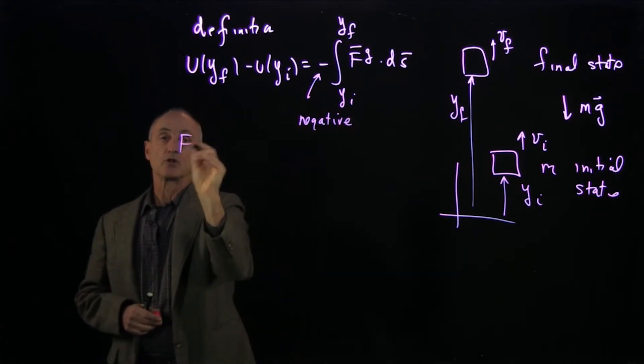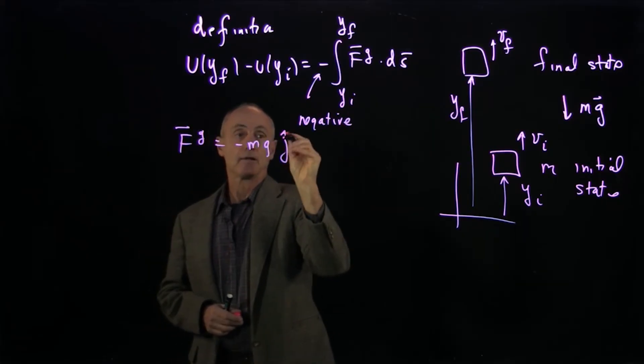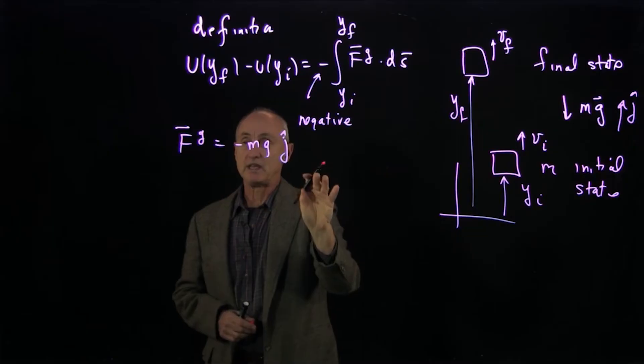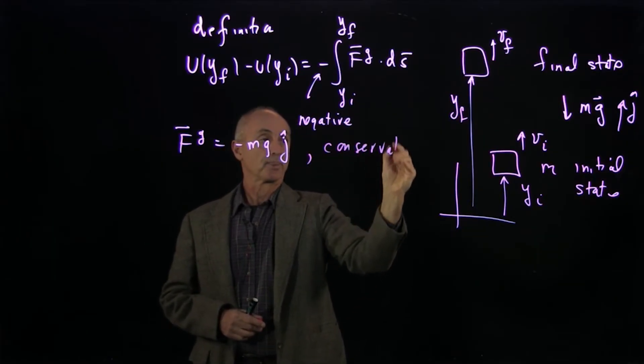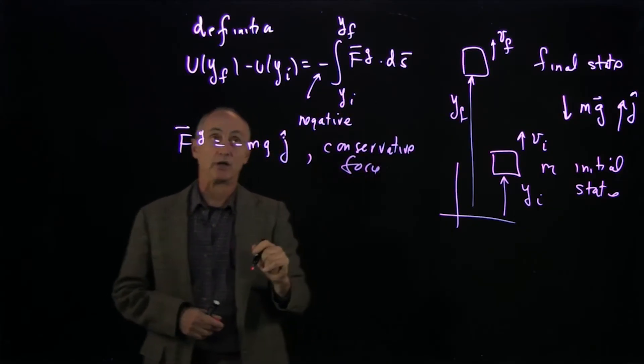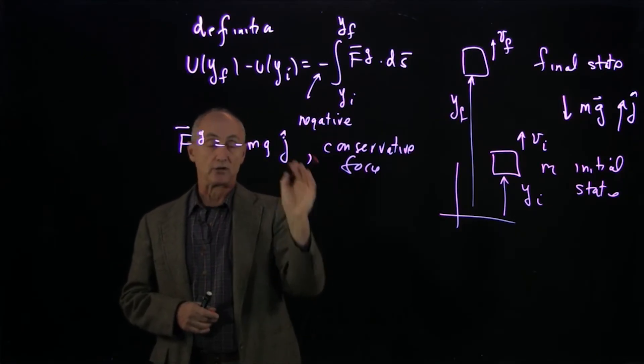Because the gravitational force here, Fg, is minus mg j hat, where we're taking j hat up, we've seen that this is an example of a conservative force. And it doesn't matter how we went from the initial to the final states. So we can generalize this idea for potential energy.